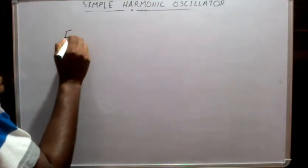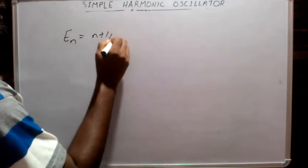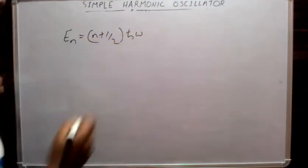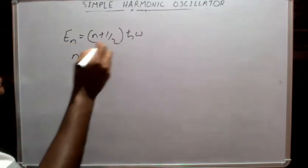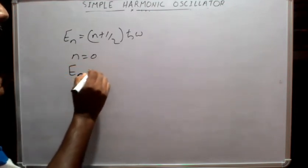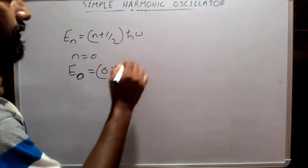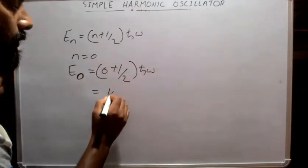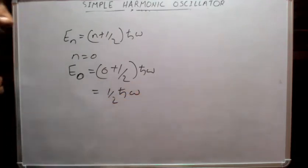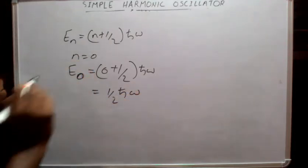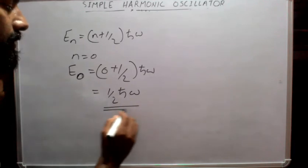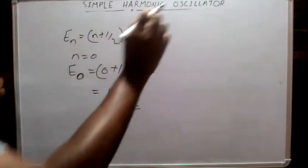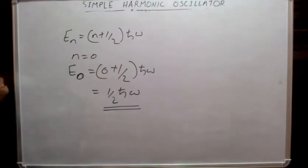The energy eigenvalue equation is E_n = (n + ½)ℏω. Because the smallest possible value of n is zero, the ground state energy of the harmonic oscillator is E₀ = (0 + ½)ℏω = ½ℏω. This is the ground state energy of the simple harmonic oscillator — at the ground state it still has some energy, and the energy is not equal to zero. This is an important result you should keep in mind.